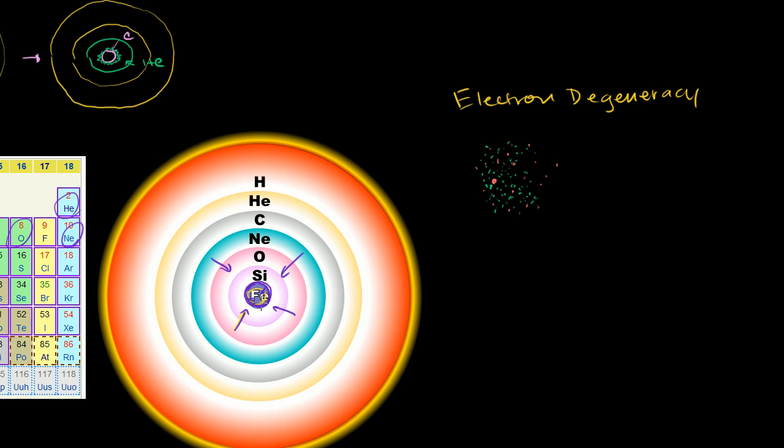But as this iron core gets even more massive, more dense, and we get more and more gravitational pressure. So this is our core now, even more gravitational pressure. Eventually, even this electron degeneracy, I guess we could call it force or pressure, this outward pressure, this thing that keeps it from collapsing, even that gives in.